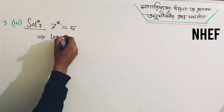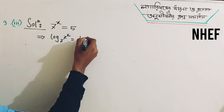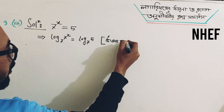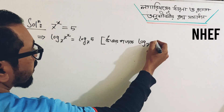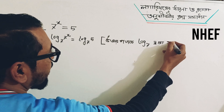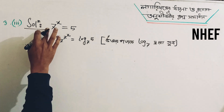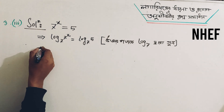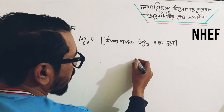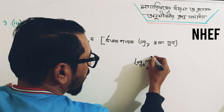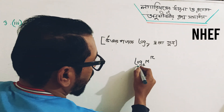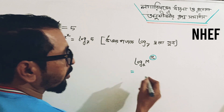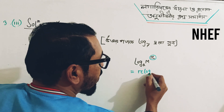Log base 7 to the power x equals log base 7 to the power x, equal to log base 7 of 5. We apply the rule: log base a of m to the power r.